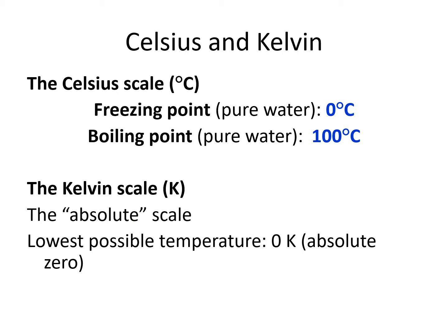The Celsius scale is based on the freezing and boiling points of water. The freezing point of water is 0 degrees on the Celsius scale, and the boiling point of water is 100 on the Celsius scale. The Kelvin scale is based on the lowest possible temperature for all substances, which is called absolute zero. Since it is an absolute scale, we do not use a degree symbol in front of the K for Kelvin. We do use a degree symbol in front of the symbols for Celsius and Fahrenheit.